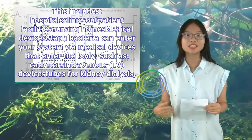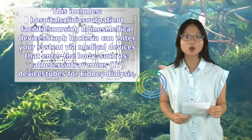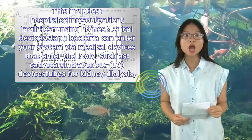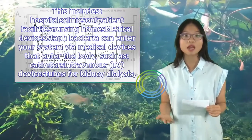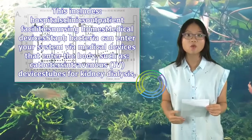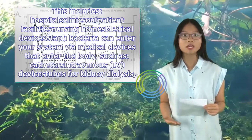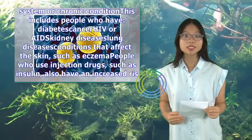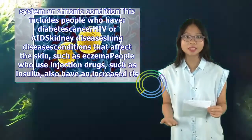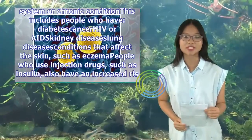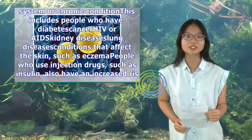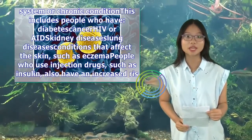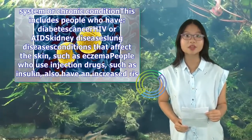Medical devices: staph bacteria can enter your system via medical devices that enter the body, such as catheters, intravenous devices, tubes for kidney dialysis, breathing, or feeding. People with a weakened immune system or chronic condition — this includes people who have diabetes, cancer, kidney disease, lung disease, or conditions that affect the skin such as eczema.